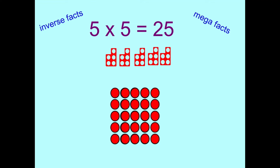Good morning, Year 2. Our last fact of the day before half term is going to be another square number. It's 5 times 5 makes 25. The picture up there shows 5 sets of 5, and then we've got the square array with 5 rows of 5. Remember there's not as many different facts you can make because it's got the same two digits times by the same digit.